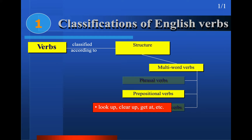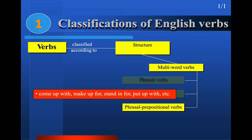Prepositional verbs are different: 'look' and 'look up,' 'clear' and 'clear up,' 'get' and 'get at' — the prepositions do not change the meaning of the verb, so these are prepositional verbs. Phrasal prepositional verbs combine a phrasal verb with a preposition: 'come up with' means to conclude with something, 'make up for,' 'stand in for,' 'put up with' — the original verb meaning differs from the phrasal verb meaning.